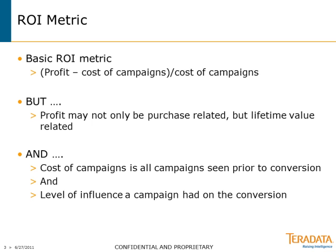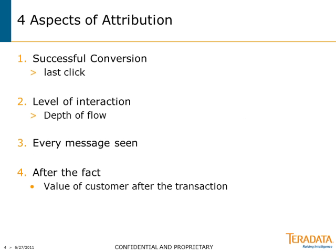What are the basic attributes or aspects of attribution? When I think of building an attribution system, I need to know what the definition of a successful conversion is. It can be a transaction, a download — whatever objective marketing has is the definition of conversion. Once we define that, we look at the last successful conversion, then back up days or weeks prior to that, and look at everything a customer saw and all the interactions they had. We want to know the depth of flow for every campaign — how far into the marketing objective it carried the customer. Online campaigns let us see this: they click, hit a landing page, go through pages, moving toward the conversion — we can measure depth of flow.